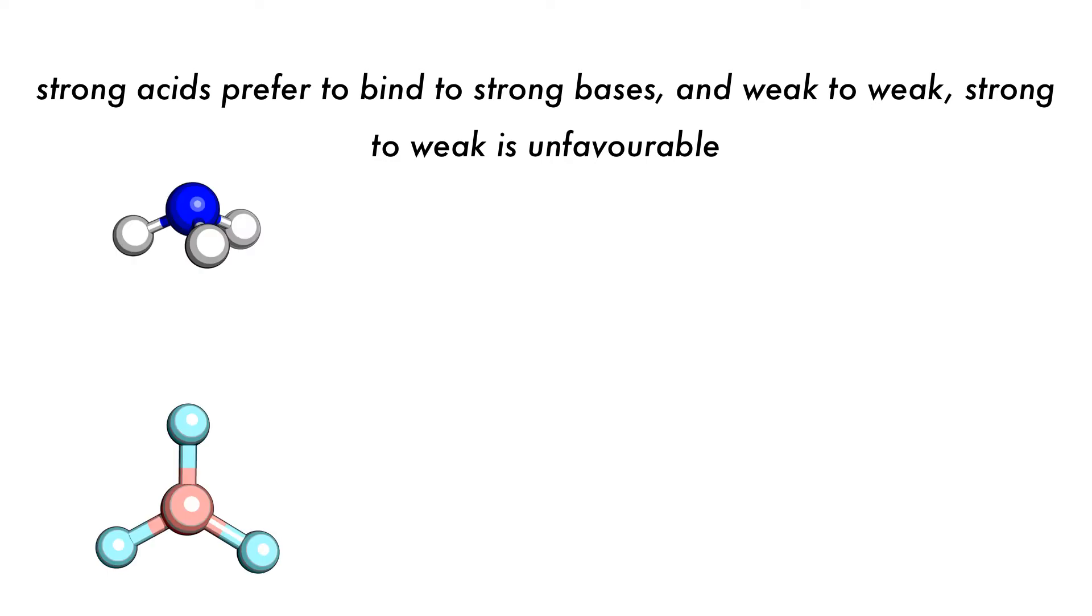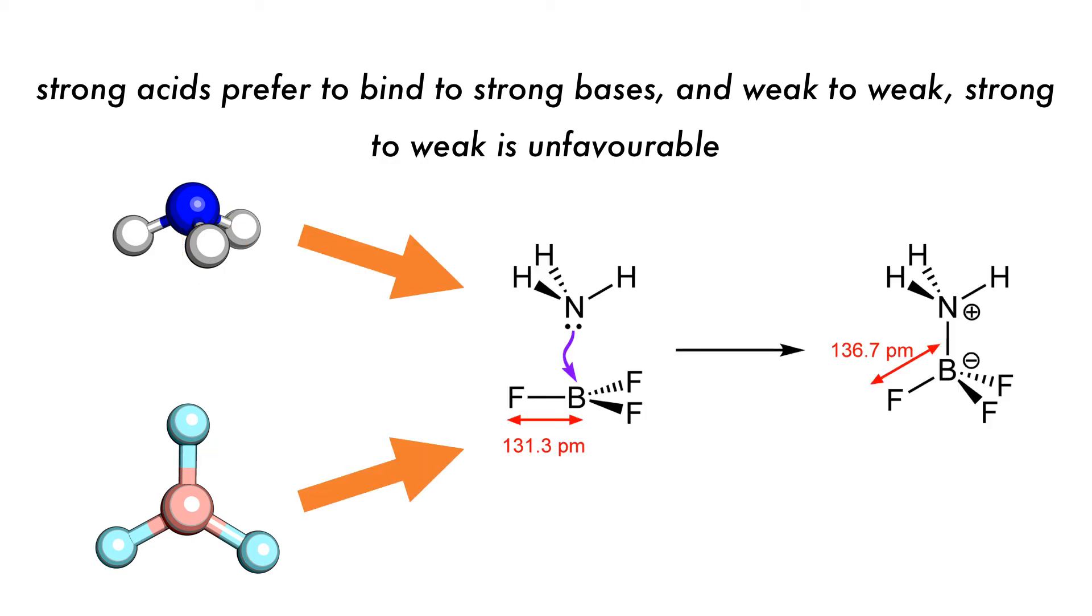If we take our previous example of BF3 and ammonia, both are classified as strong. Ammonia is a strong Lewis base due to the electron donation from the hydrogens, and BF3 is a strong Lewis acid due to its electron deficiency caused by the electron-withdrawing fluorine groups. They then combine to form a strong acid-base adduct.